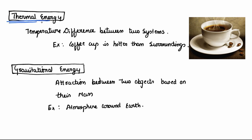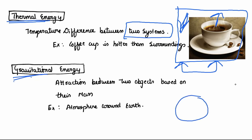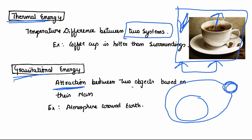Thermal energy relates to temperature. The temperature difference between two systems is thermal energy. For example, a hot coffee cup placed in a cooler environment — there is a temperature difference between the cup and the surroundings, and that is thermal energy. Gravitational energy is the attraction between two objects depending upon their mass — for example, the atmosphere around the earth and the moon orbiting the earth are results of gravitational energy.